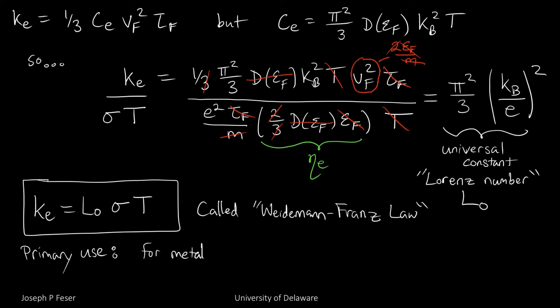And the proportionality between the electronic portion of the thermal conductivity to the electronic electrical conductivity, that law is called the Wiedemann-Franz law. And it's super important and ubiquitous in the field of heat, micro-scale heat transfer.